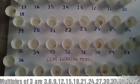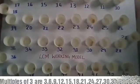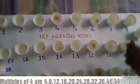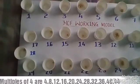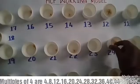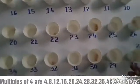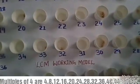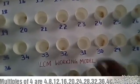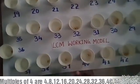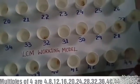The next number we have is 4. Now we go on counting the multiples of 4. The multiples of 4 are: 4, 8, 12, 16, 20, 24, 28, 32, 36, 40, 44, and so on.